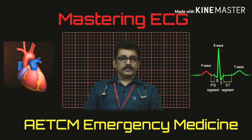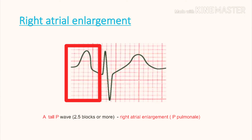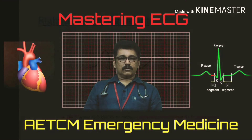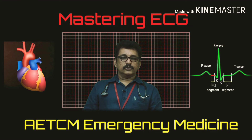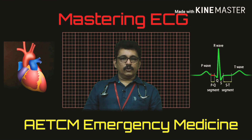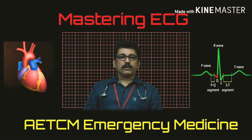This ECG shows very tall P-waves. A tall peaked P-wave is called P-pulmonale. The classical condition producing P-pulmonale is right atrial enlargement. Right atrial enlargement is commonly seen in chronic obstructive pulmonary disease (COPD). A tall peaked P-wave more than 2.5 divisions is a sign of P-pulmonale, classically seen in cor pulmonale or COPD with right atrial enlargement.